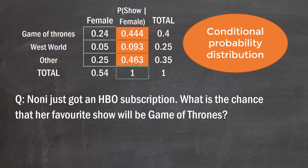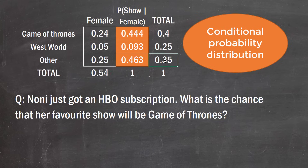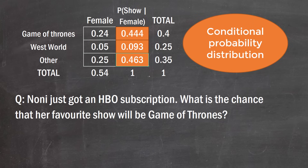We can now compare this conditional probability distribution to the marginal probability distribution. Without considering sex: 40% like Game of Thrones, 25% like Westworld, 35% like other. When we condition on gender, those proportions shift: females are more likely to like Game of Thrones than the general population, less likely to like Westworld, and slightly more likely to prefer other shows.